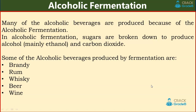Alcoholic fermentation. Many of the alcoholic beverages are produced because of alcoholic fermentation. In alcoholic fermentation, sugars are broken down to produce alcohol — mainly ethanol — and carbon dioxide. Some of the alcoholic beverages produced by fermentation are brandy, rum, whiskey, beer, wine, etc. Although the concentration or the amount of alcohol present in these beverages may vary from each other.